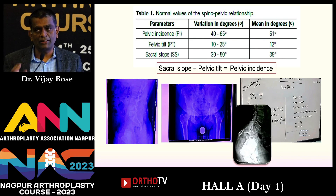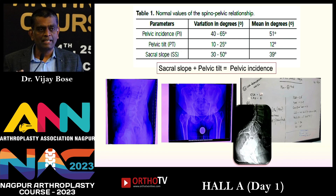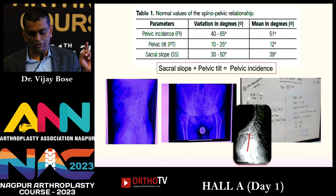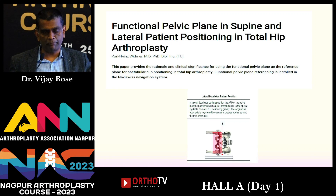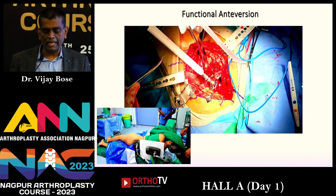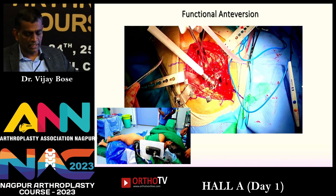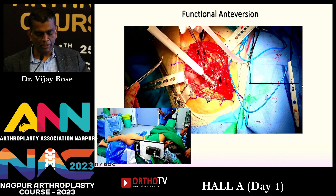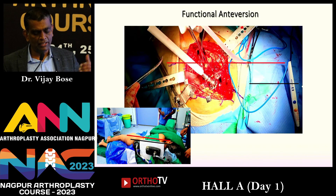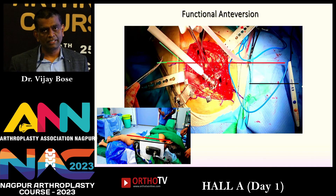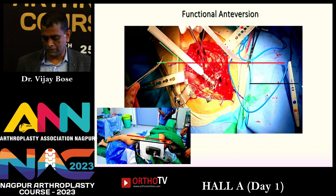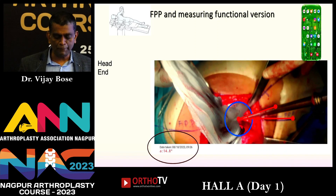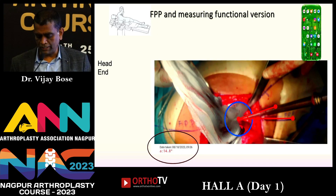The key message: start doing lateral decubitus spinopelvic films in all your cases — it's a treasure trove of information. The functional pelvic plane is well described in literature. Intraoperatively, finding the anteversion is simple: draw the functional pelvic plane from the thermocol, then draw a parallel line to the center of the socket — that angle is your functional anteversion. You can measure it with apps on your phone. In this patient the value is 14 degrees. It may equal native version or not, and you adjust accordingly.